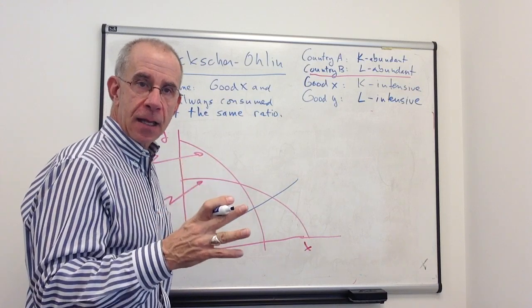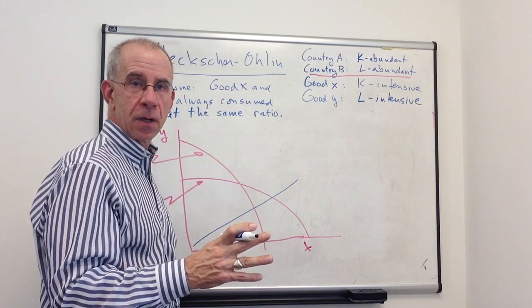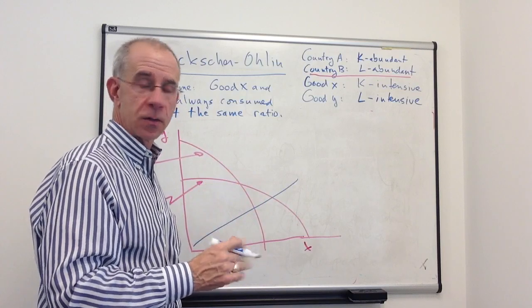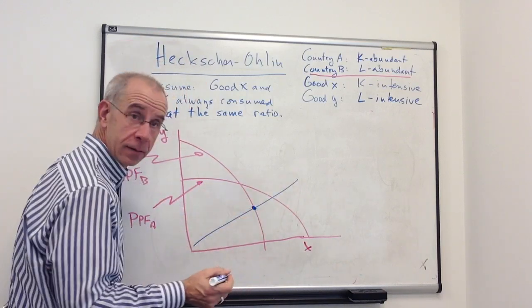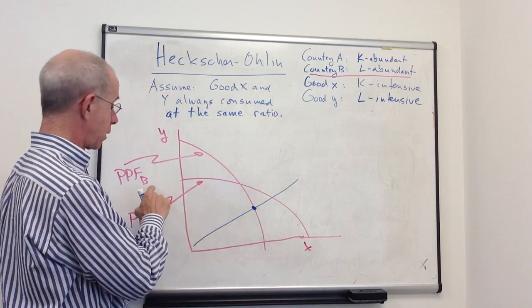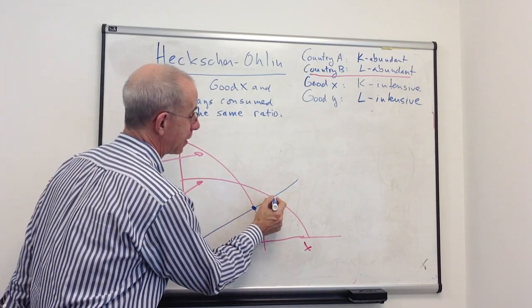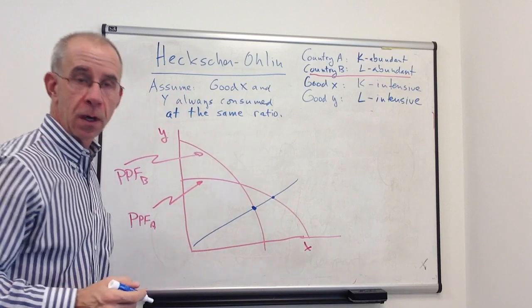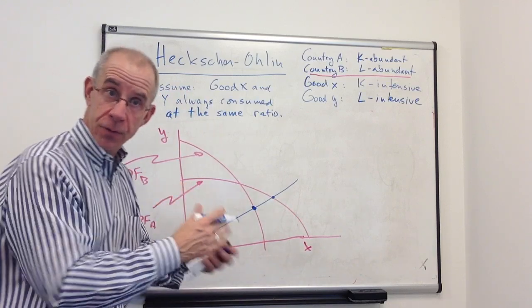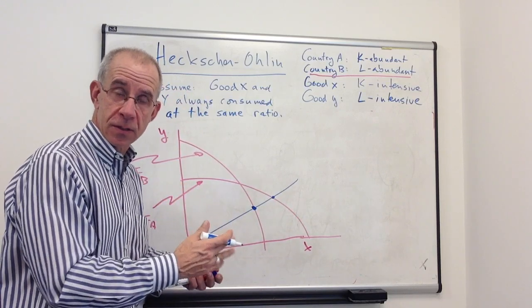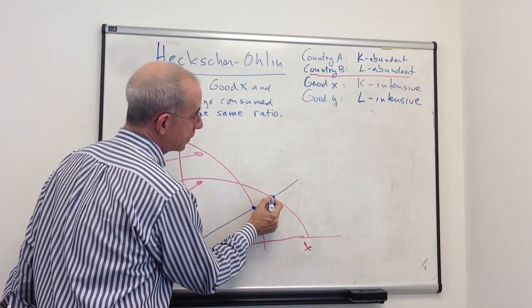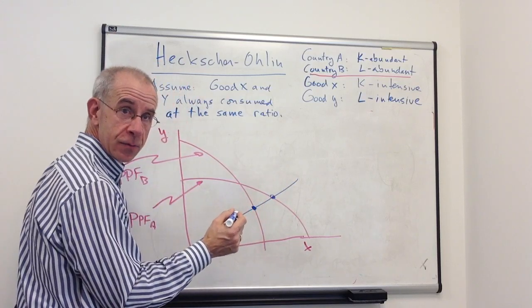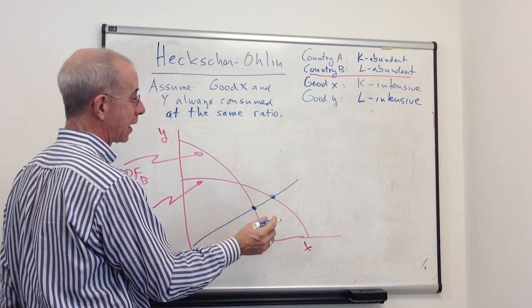If that's the case, where do the two countries consume and produce in autarky? Well, that's going to be given by that point for country B and that point for country A. They both are going to consume the goods in the same proportion. And so this is where production equals consumption for both goods in country A.